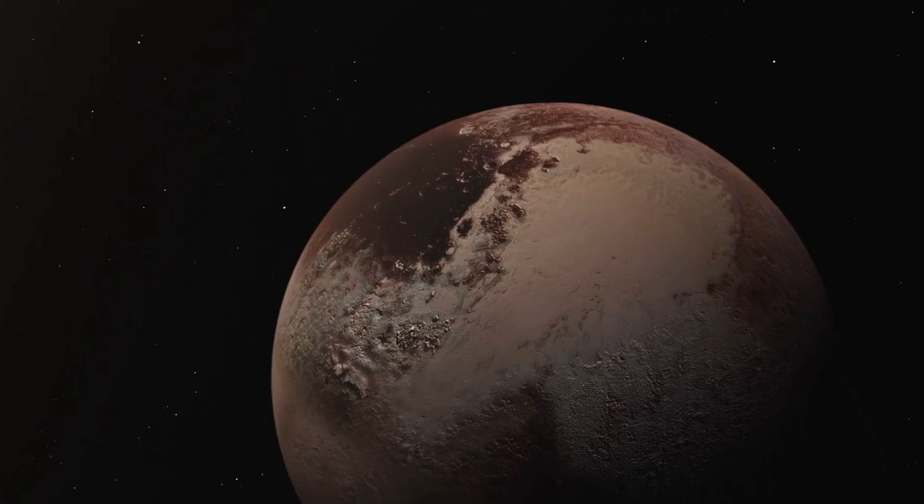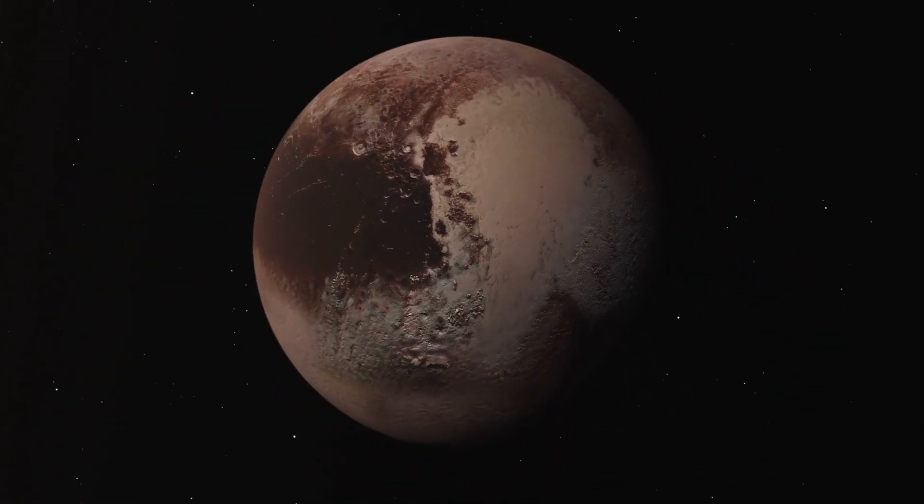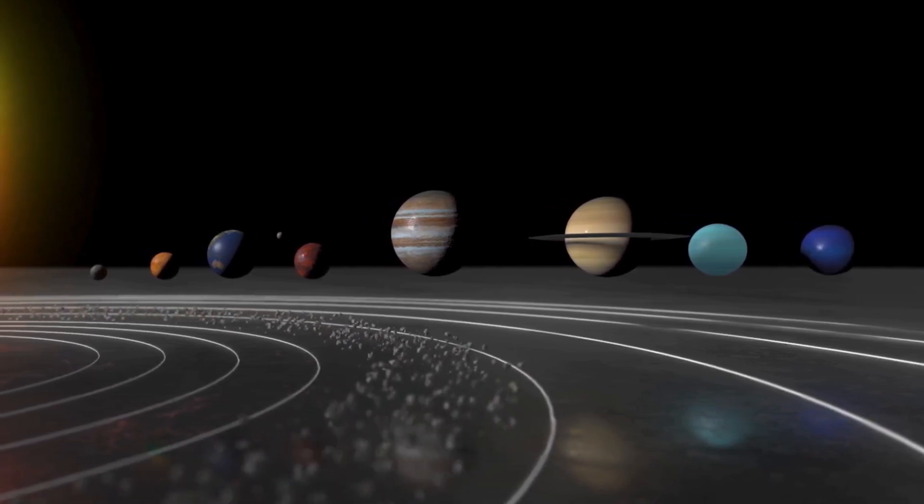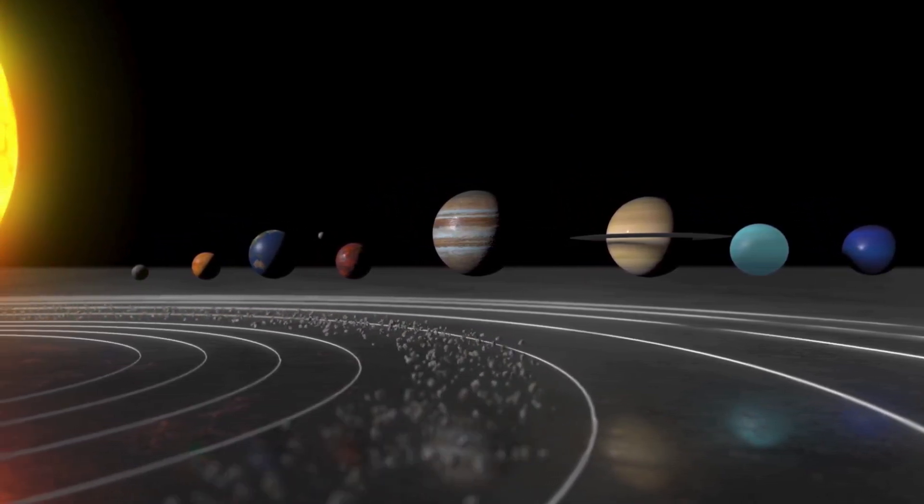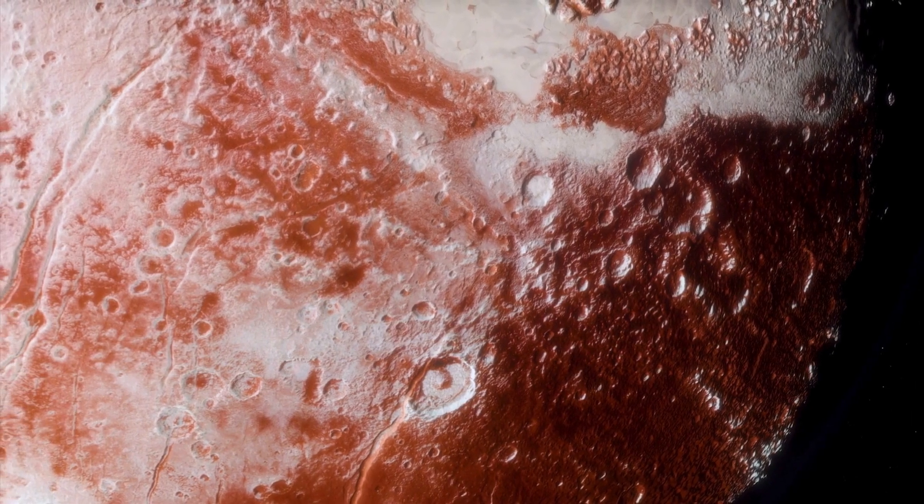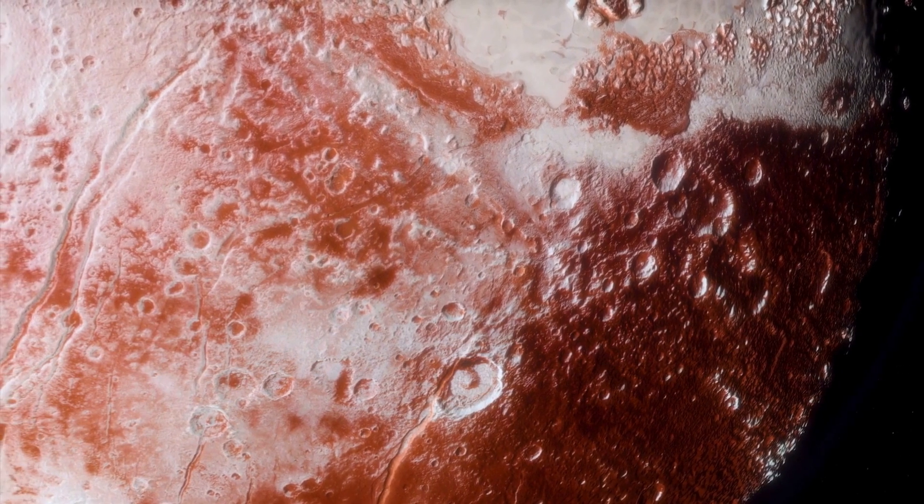The stability of Pluto's orbit amid these complexities is evidence of the intricacies of space mechanics. The three-body problem in space is about figuring out how three objects like Pluto, Neptune, and the Sun move and influence each other with their gravity. It's like trying to predict where they will go based on where they start and how they pull on one another.